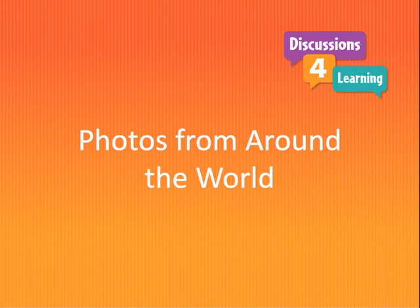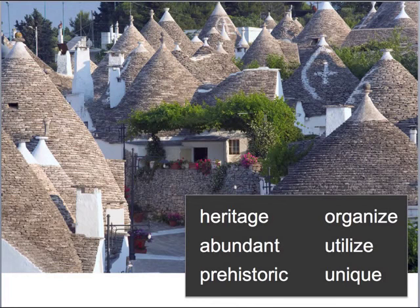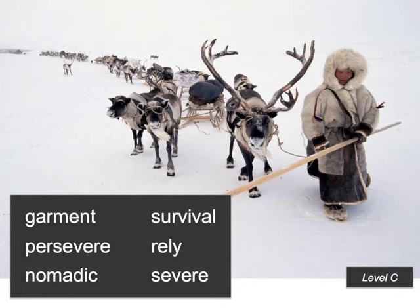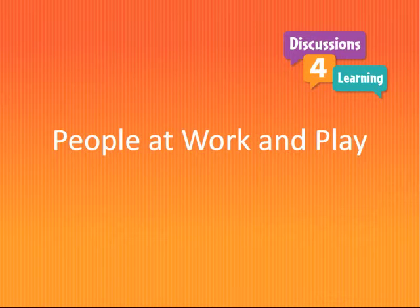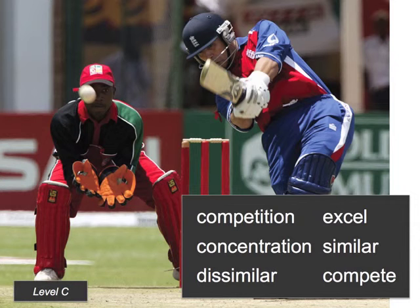The real-world photos include dramatic images from around the world, such as this image of the Great Wall of China. Students discuss a contemporary image of a boy on an ancient structure. These prehistoric style rooftops in Italy are included in UNESCO's list of World Heritage Sites. Cattle stranded on a strip in the Amazon in Bolivia following a deluge of rain, and nomadic people in Siberia and how they persevere in the severe cold. Students will also see construction workers building a skyscraper, and cricket players in Zimbabwe — a great way to compare cricket to baseball while using the words 'similar' and 'dissimilar.'